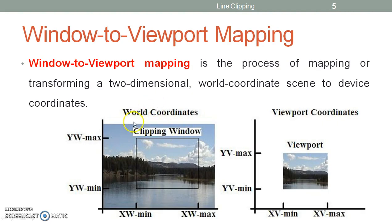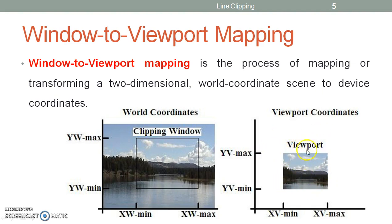Let me explain this transformation with the help of an example. Here we have a real-time scenery which we are capturing through a camera. When captured, it is defined in the world coordinate system. We have a rectangular clipping window, so all the part of the image inside this window would be displayed, whereas the part outside the clipping window would be discarded. When the time comes to display this on the screen, wherever the image is displayed is known as the viewport, using viewport coordinates, also known as screen coordinates. Thus, window-to-viewport mapping is the process of mapping a two-dimensional world coordinate into device coordinates.